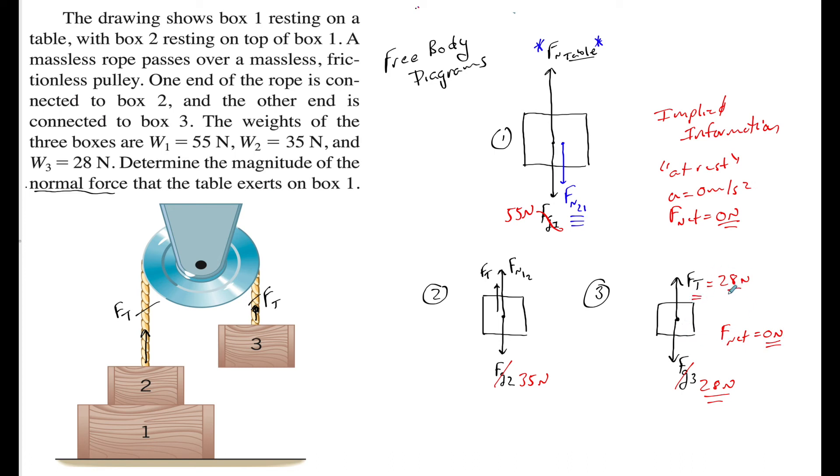So if this FT is equal to 28, and we know that FT is equal everywhere, I now can make this 28 Newtons as well. And F net still needs to be equal to 0 Newtons. Therefore, if I have 35 Newtons pointing downward, if I were to solve for F net, I would say 35 - 28 - FN1 on 2, that would allow me to solve for this value, which is going to be 7 Newtons.